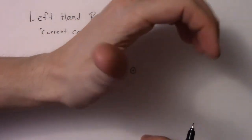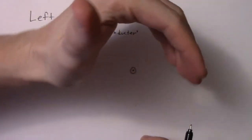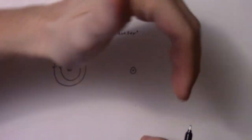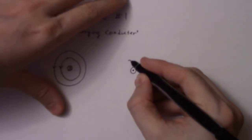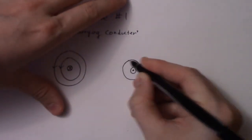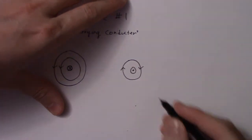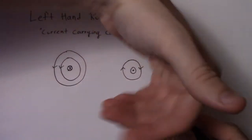So that current is coming straight out of the page, so my thumb goes in that direction, and then it's going to curl around this way. So this is actually going clockwise. It's going around like this.